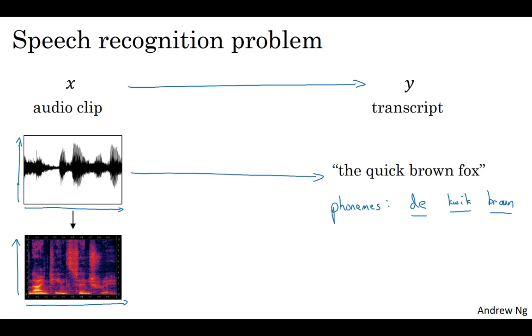But with end-to-end deep learning, we're finding that phoneme representations are no longer necessary. Instead, you can build systems that input an audio clip and directly output a transcript without needing to use hand-engineered representations like these.